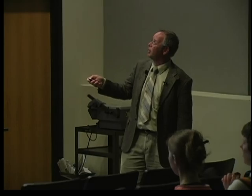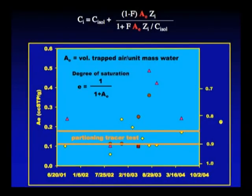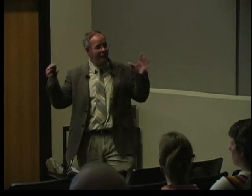There's some more information that comes out of this excess air model. One of these fitting parameters is simply the volume of trapped air per unit mass of water, related to the degree of saturation. When we solve for that parameter, we get values that are 0.1, 0.2, on the same order as we got from this gas partitioning tracer test. A very different technique at a very different scale on the same material, giving us a very similar answer with respect to how much gas is trapped here.